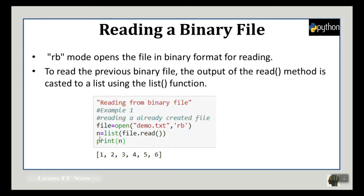Then we take a variable and assign it: variable = list(file.read()). This function will convert whatever the file reads into a list — for example, 1, 2, 3, 4, 5, 6. Because in binary, the list we stored previously is not stored as a list; it is stored as numbers. So while reading, we need to convert it back to a list.